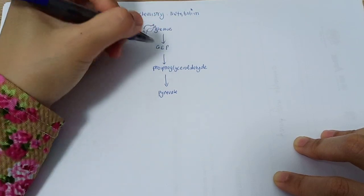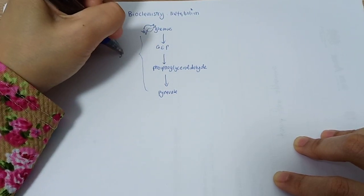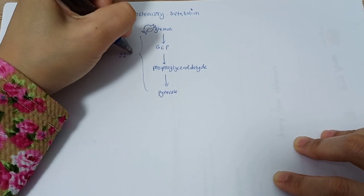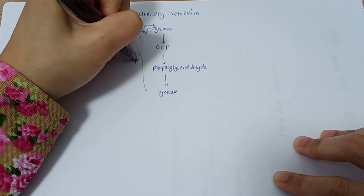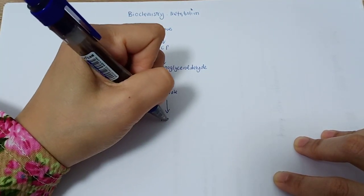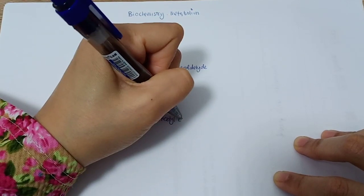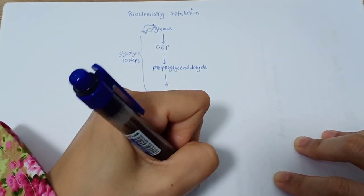These simplified steps are what we call glycolysis, which is composed of 10 steps all together. From pyruvate, it will further convert into acetyl-CoA before entering the mitochondria to get into the Krebs cycle.